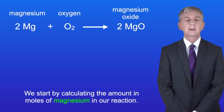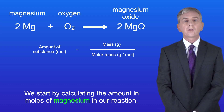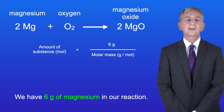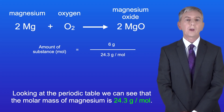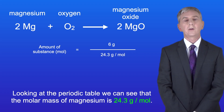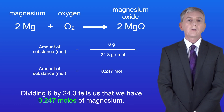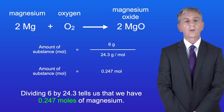We start by calculating the amount in moles of magnesium in our reaction. The amount of substance in moles equals the mass in grams divided by the molar mass in grams per mole. We've got 6 grams of magnesium. Looking at the periodic table we can see that the molar mass of magnesium is 24.3 grams per mole. Dividing 6 by 24.3 tells us that we've got 0.247 moles of magnesium.